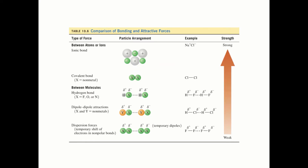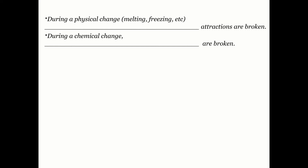Comparing intermolecular force strength: dispersion forces are weakest, then dipole-dipole, then hydrogen bonding — these are the strongest. Note that these are intermolecular forces, meaning they act between at least two different molecules. By contrast, ionic bonding (metal + nonmetal) and covalent bonding (two nonmetals) are intramolecular forces — within a molecule — and are always stronger than intermolecular forces.